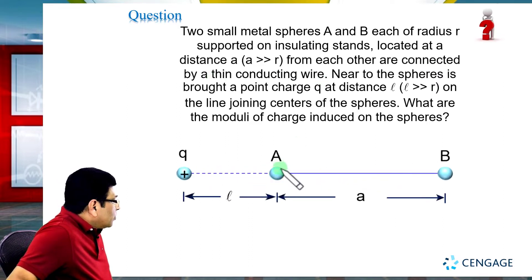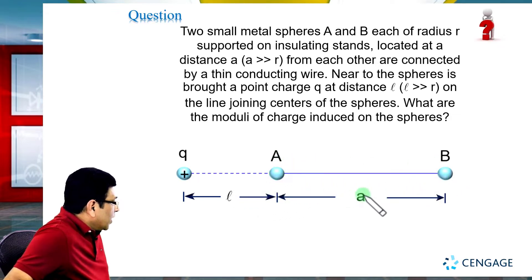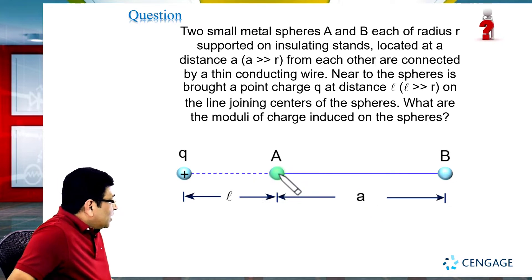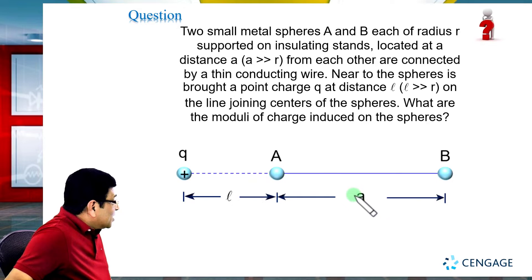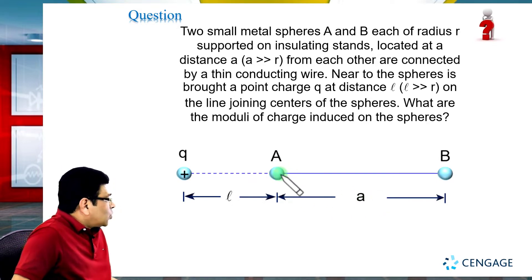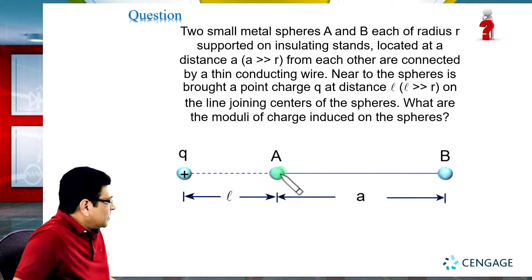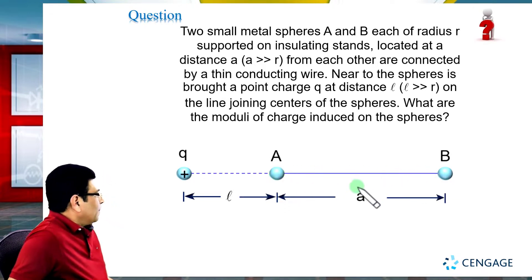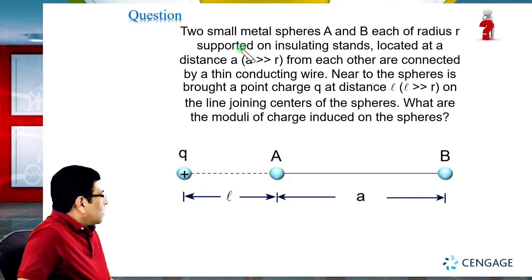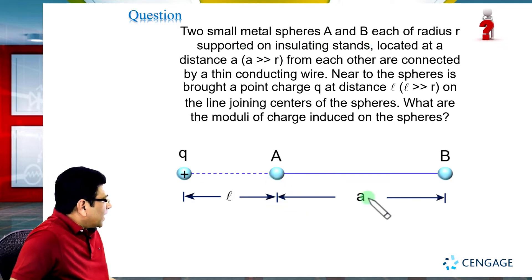In this diagram you can observe sphere A and sphere B, both separated at a distance small a. The radius of these spheres is much smaller than the separation. These two spheres are connected by a thin conducting wire, meaning they are interconnected, and they are supported on insulating stands, meaning they are not connected to earth.